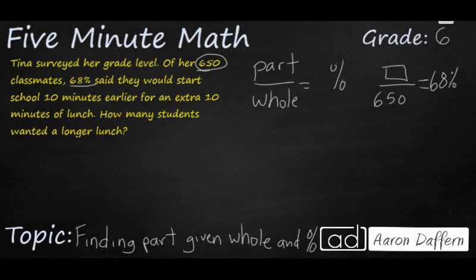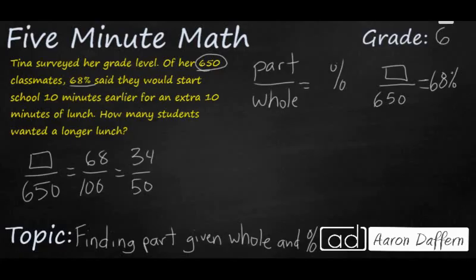So here's our equation. Let's go ahead and set that up as a proportion. Unknown over 650. That's going to equal 68% or 68 over 100. We can go ahead and reduce that by dividing top and bottom by 2. Make it a little bit smaller. So we're going to make that 34 over 50. Now we can do our cross multiplication.